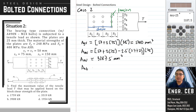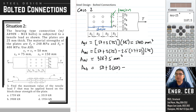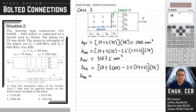For the net tension area in case 2, the gross tension width is S3 + 2×S4 = 50 + 2×150. We subtract 1 + 1 + 0.5 = 2.5 holes. Multiplying by the thickness, ANT = 6,937.5 square millimeters.